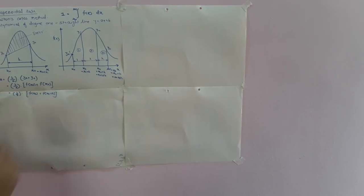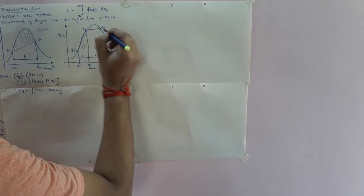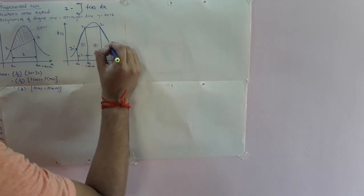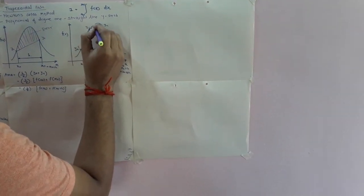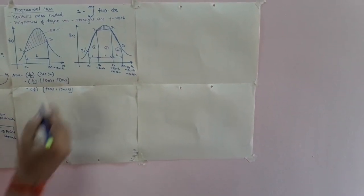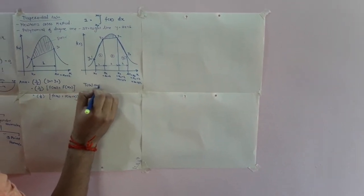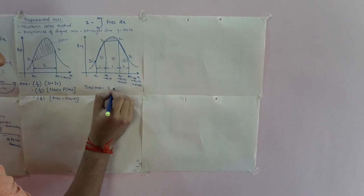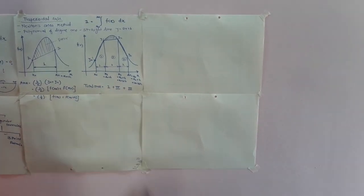Each pair of consecutive points is joined with a straight line. If you observe, the error is very much less compared to the previous single-strip case. The total area equals the area of the first strip plus the area of the second strip plus the area of the third strip.